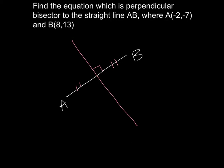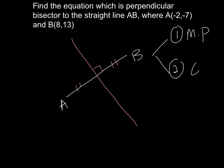So remember, whenever the question asks you to find the perpendicular bisector, you will need two pieces of information to find the equation. First, you will need the midpoint, and then you will need the gradient. If we can find the gradient of AB, we just use M1 multiplied by M2 equal to negative 1 to find the gradient for this equation. Then substitute the gradient and the coordinate into the equation formula.